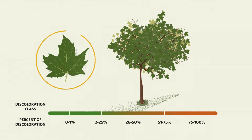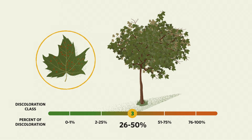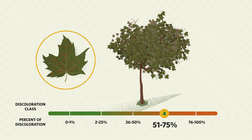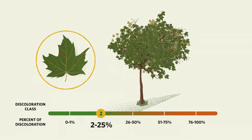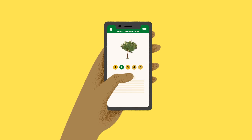Discoloration is measured in 25% classes, with Class 1 being no signs of discoloration to a trace amount, Class 2 being 2–25%, Class 3 being 26–50%, and so on. Once you have estimated the class of leaf discoloration, record your estimate into the Healthy Trees Healthy Cities app.